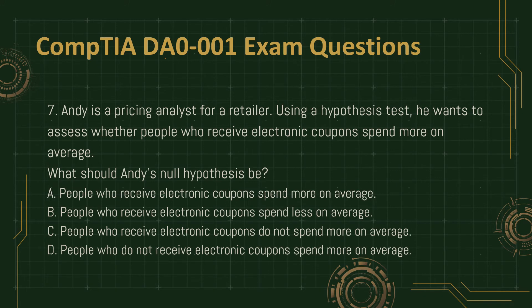Question 7: Andy is a pricing analyst for a retailer. Using a hypothesis test, he wants to assess whether people who receive electronic coupons spend more on average. What should Andy's null hypothesis be? A. People who receive electronic coupons spend more on average. B. People who receive electronic coupons spend less on average. C. People who receive electronic coupons do not spend more on average. D. People who do not receive electronic coupons spend more on average.